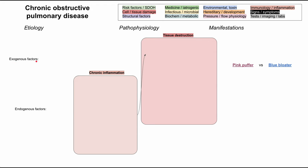There are exogenous factors that cause COPD, as well as endogenous factors. The exogenous factors are probably the ones you think of first — these are essentially environmental toxins. Tobacco use is the most common cause in the United States. Secondhand smoke can also cause COPD. Air pollution and fine dusts can also cause COPD, which is more common in other countries outside the United States.